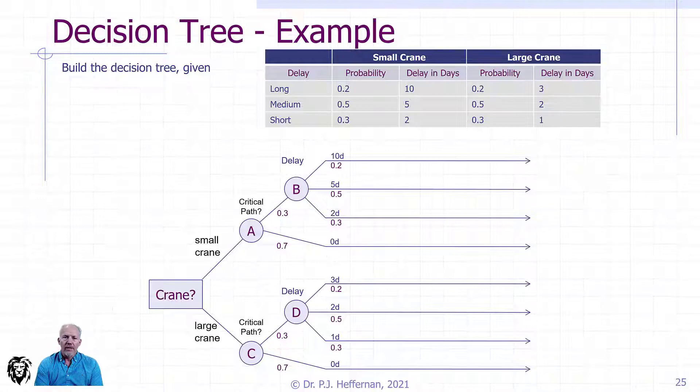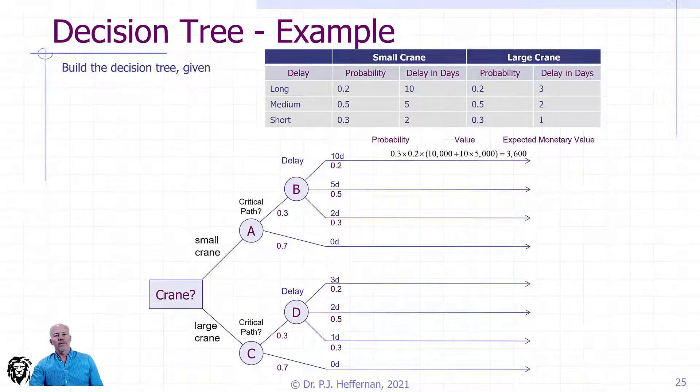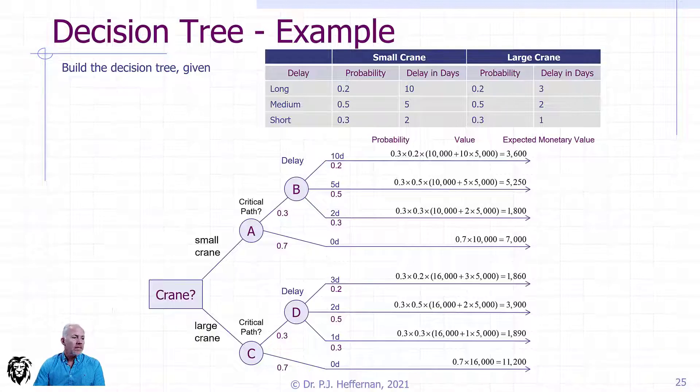The last thing we have to do is actually calculate the equivalent values, the equivalent monetary values. We take our probability and multiply it by the cost or the impact. Unlike the easy example we saw in the introductory video, we have multiple probabilities coming together. We have a 30% chance we're on the critical path and a 20% chance that we're in a long delay, so we have 0.3 times 0.2. It's $10,000 to rent the small crane and $5,000 per day of delay, so 10 times 5,000. The expected monetary value for that particular branch is $3,600. We calculate the same thing all the way down our tree for each of those lines.